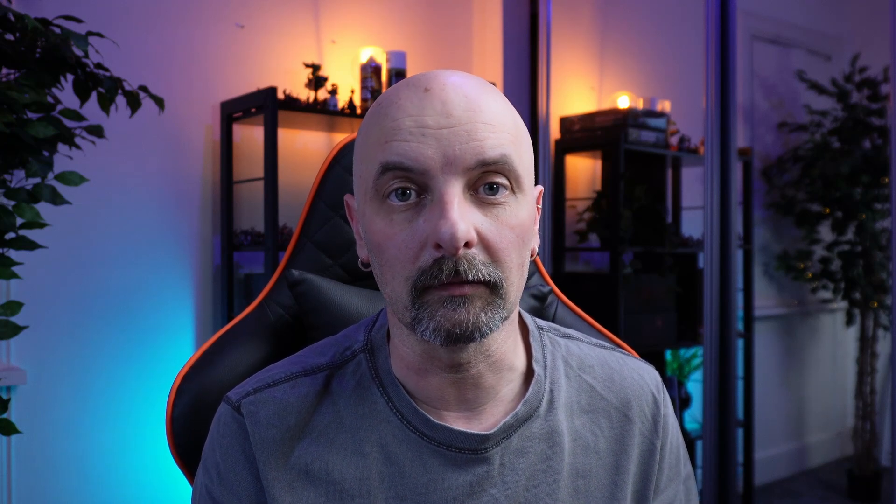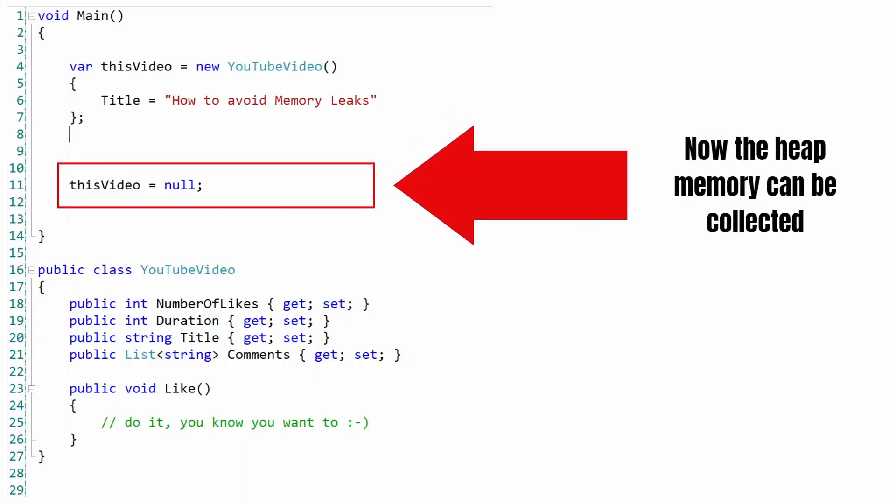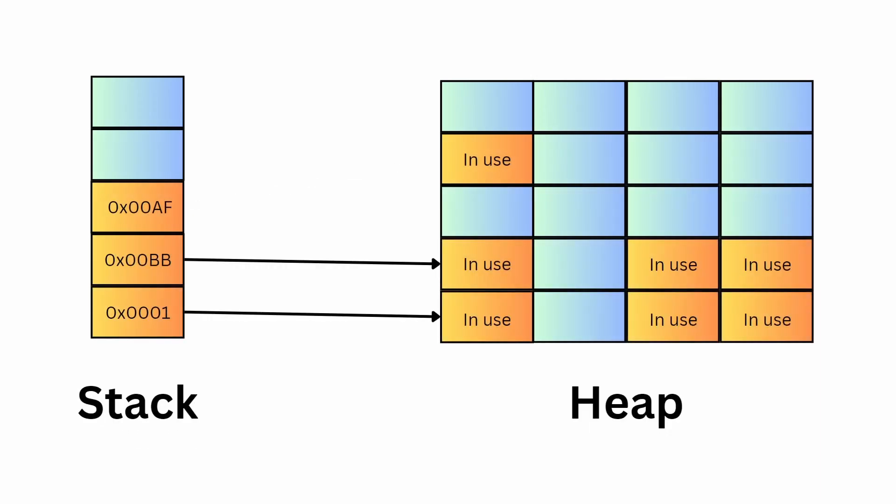To understand memory leaks, we first need to understand a bit about what the garbage collector actually does. Whenever your application needs memory, it's the garbage collector that allocates that memory. The garbage collector also keeps track of which objects are being used and which objects are no longer in use. The ones that aren't in use anymore, the garbage collector can clean and reclaim the memory used by those objects to provide back to the application when it needs the next batch of memory. An object is considered no longer in use when it's no longer referenced by your application. Memory leaks occur when we have objects that we are no longer using but we still have references pointing to those objects, so the garbage collector thinks that it cannot reclaim the memory used by those objects.